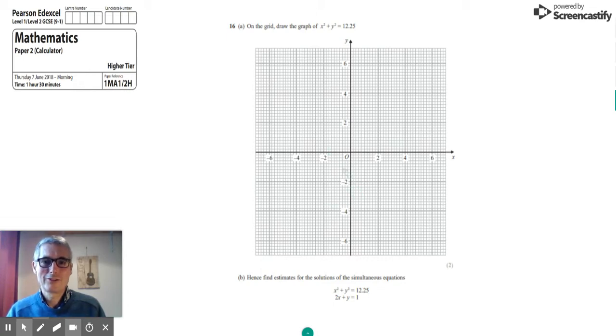Hello and welcome to Gary Teacher's Maths. I'm currently going through the Edexcel 2018 Higher Tier GCSE Maths paper. This is paper 2 and it's the calculator paper. We're asked to draw this graph which is x squared plus y squared equals 12.25.